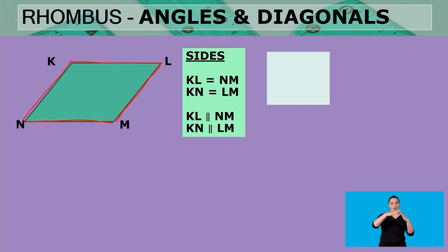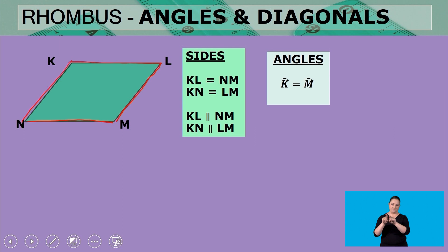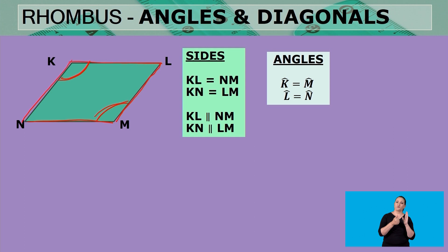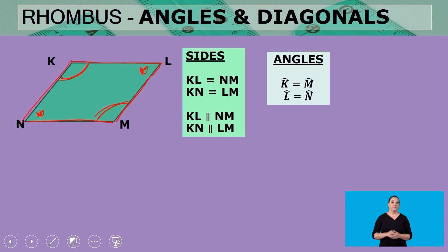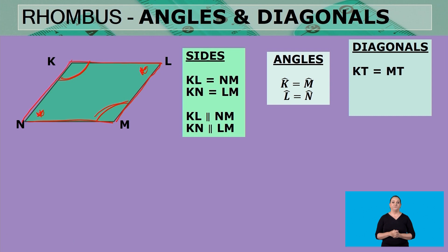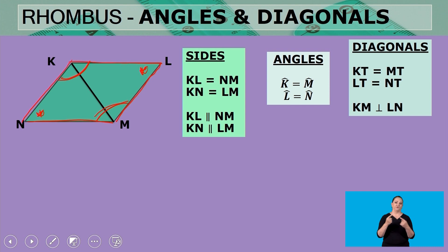When it comes to the angles, the opposite angles are equal — so angle K equals angle M, which is a property of a parallelogram that also applies to a rhombus. Of course, angle L equals angle N, so angle N equals angle L.